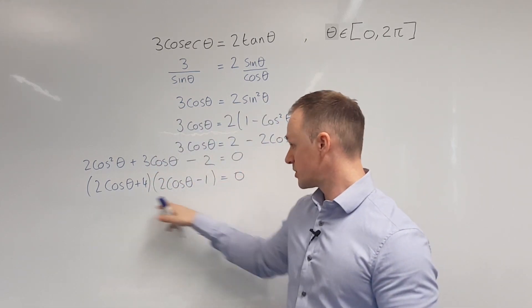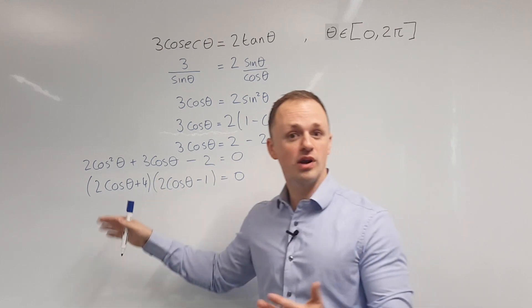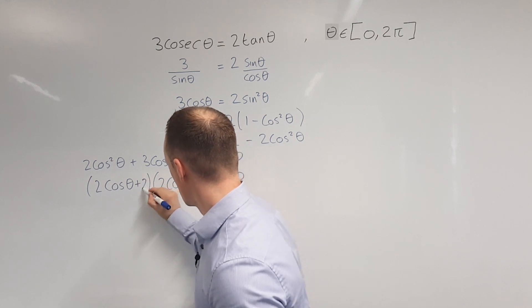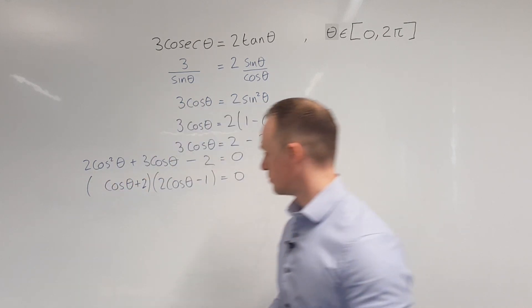But if I multiply out this, that would give me 4 cos squared. So I've got to pull out a factor of 2. I can do that from this bracket by dividing it by 2. I can change it to cos theta plus 2.